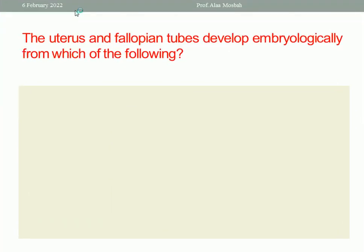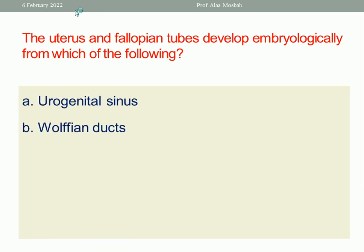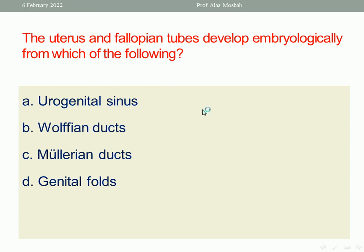The first question: the uterus and the fallopian tubes developed embryologically from which of the following — urogenital sinus, Wolffian ducts, Müllerian ducts, or urogenital folds? Of course, all of us know that the uterus and the fallopian tubes developed from the Müllerian ducts. This is the best one-response answer.